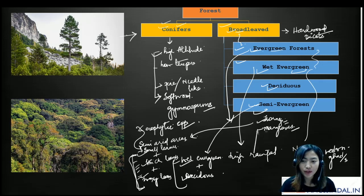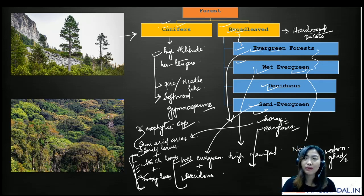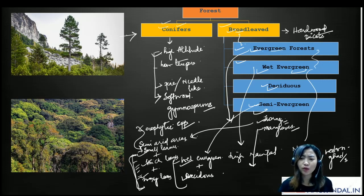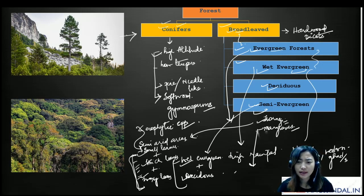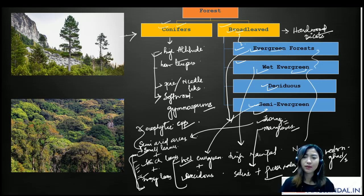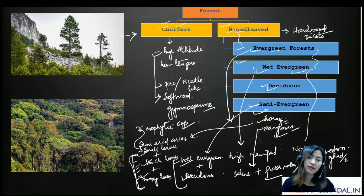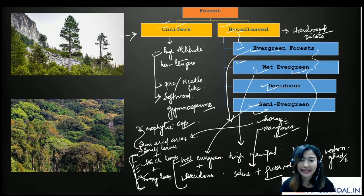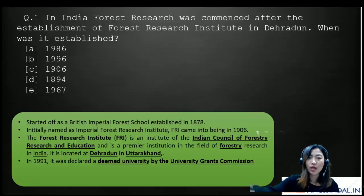Mangroves are usually found in coastal or delta regions and these trees or forests are mostly grown in a mixture of saline as well as fresh water. I've discussed all the mangroves in previous lectures. If you can list out the mangroves in India, don't forget to comment in the comment section.